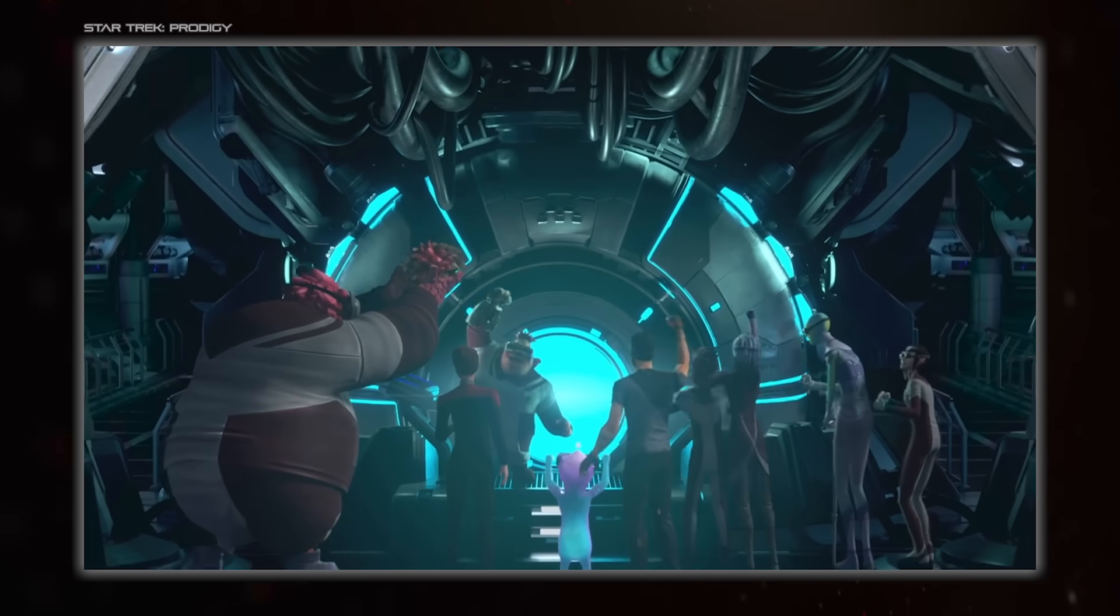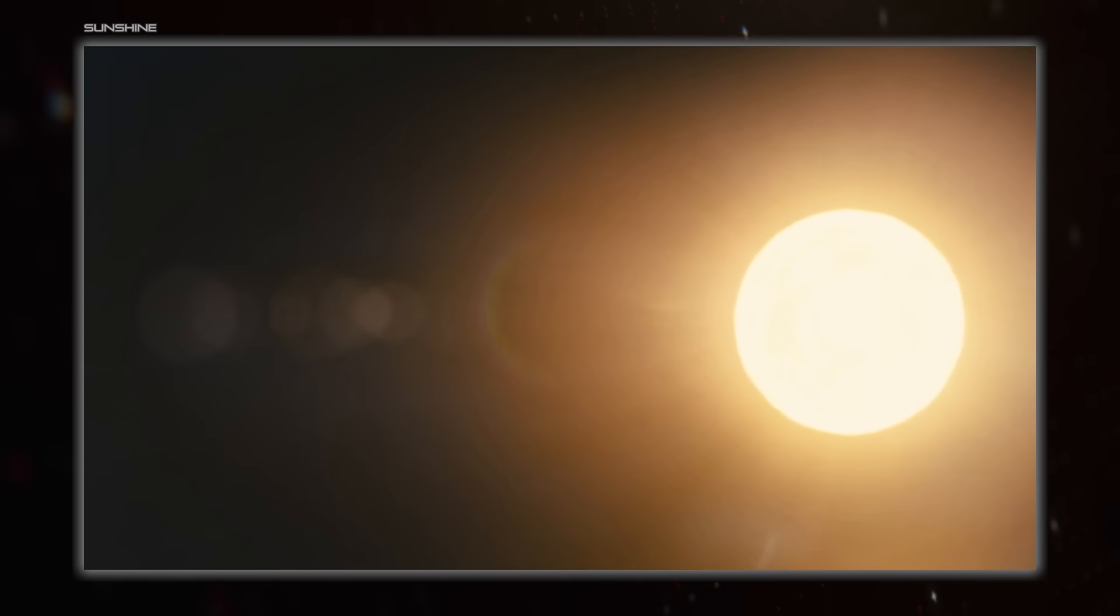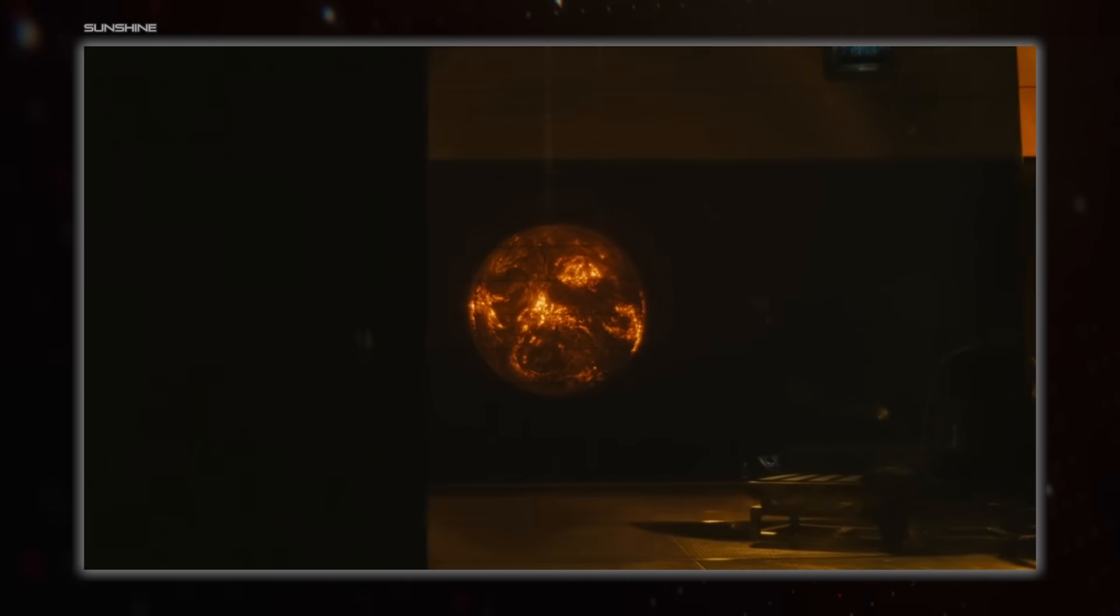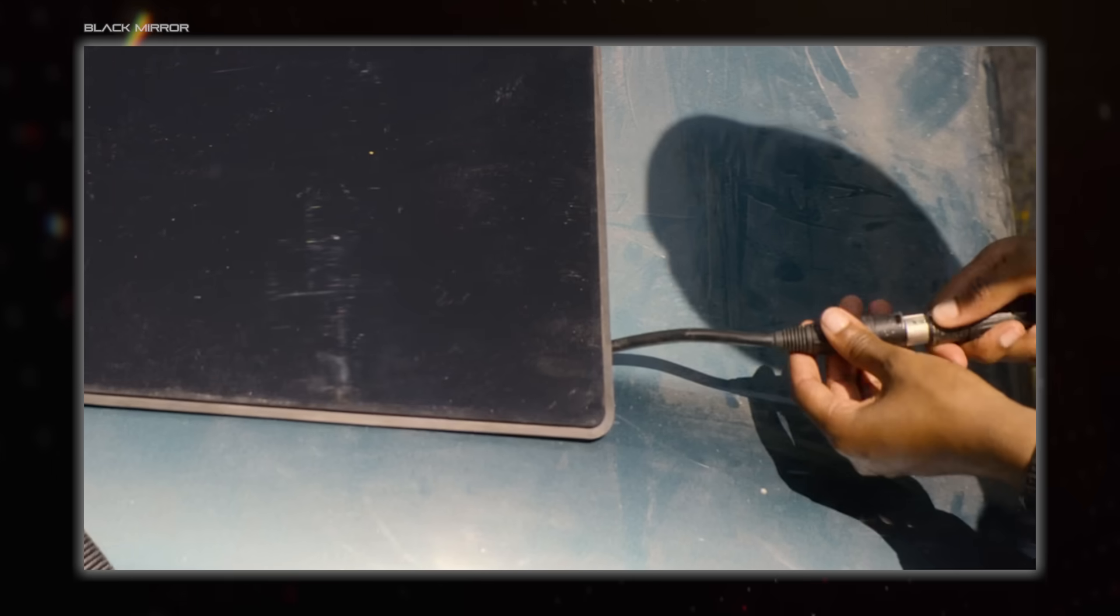We start with the most abundant source of power in any solar system, its star. These balls of fusion output a gargantuan amount of energy that can be collected in a number of ways, like with photovoltaics, which directly produce electricity from photons.